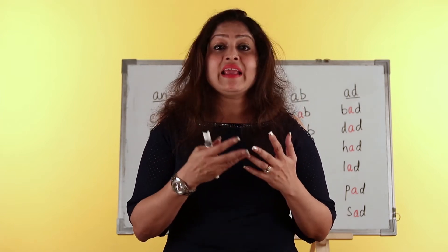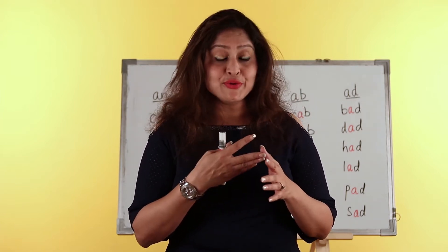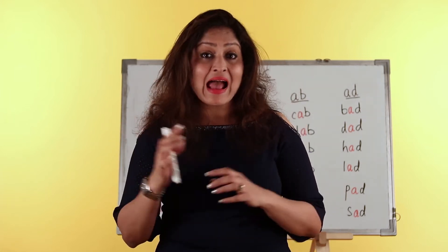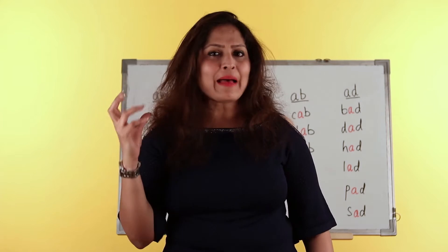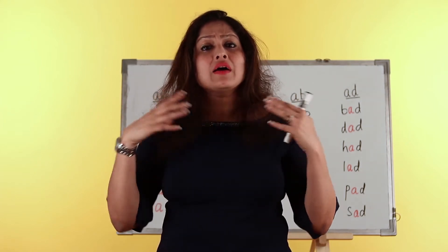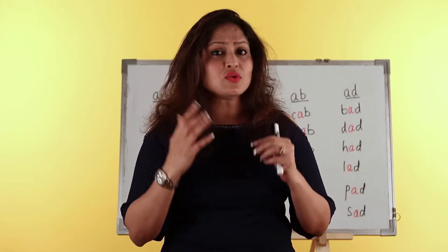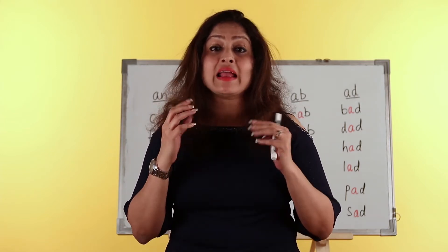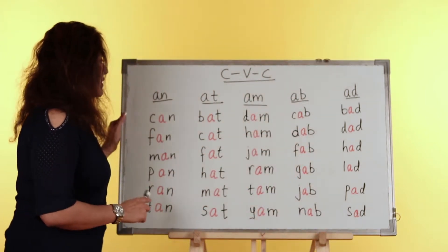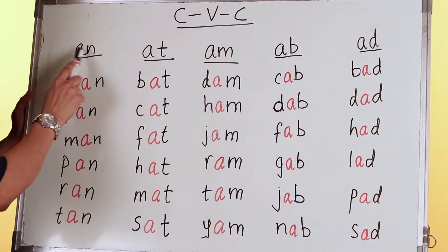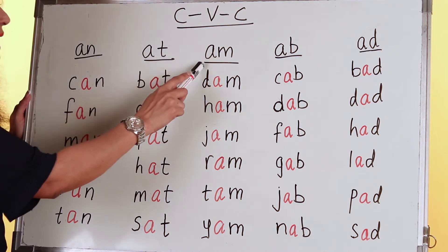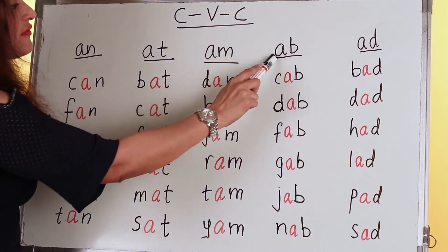The vowels are A, E, I, O, and U. Let's start with the first vowel, A, which says 'a' as in 'at' or 'apple.' With just one vowel we can make hundreds of words. So let's look at some of the words we can form with A in the middle. I have written some of the words here: AN, AT, AM, AB, and ADD.